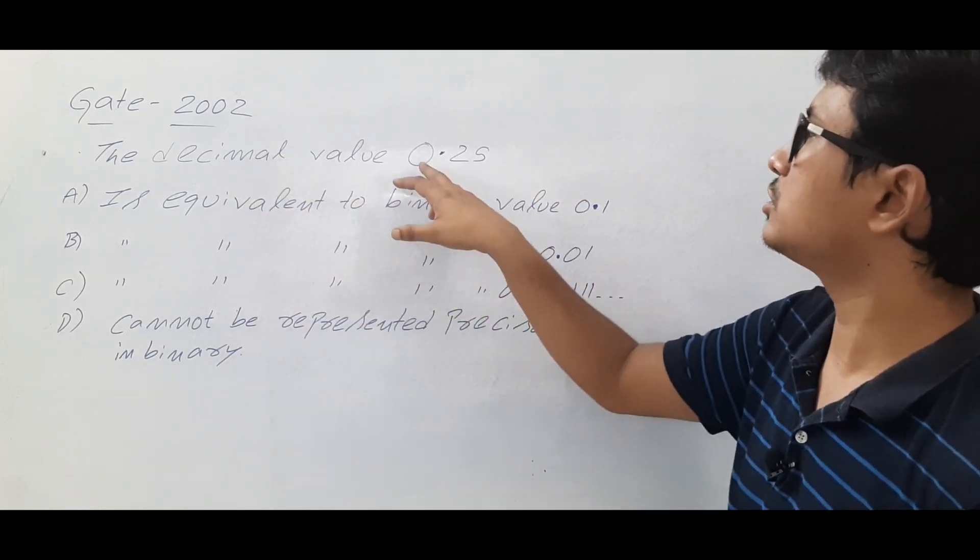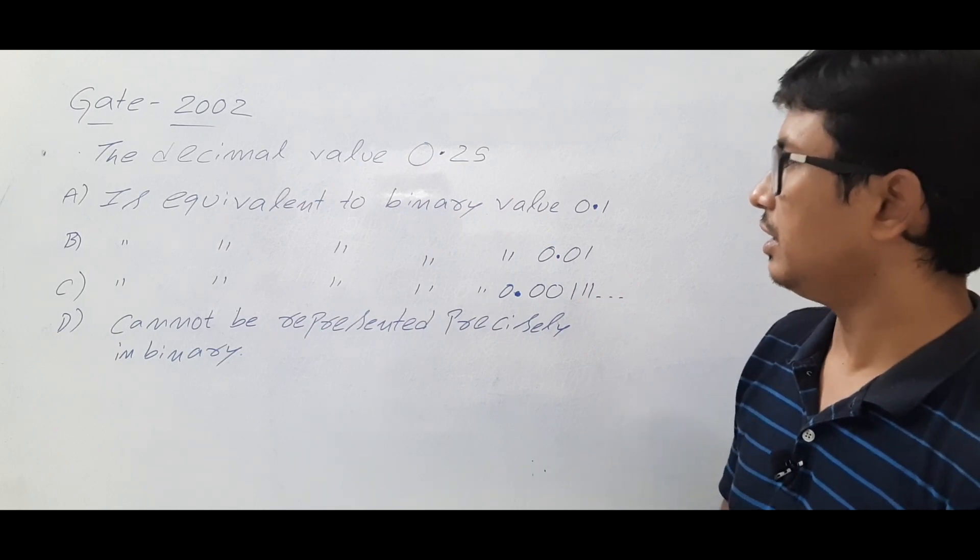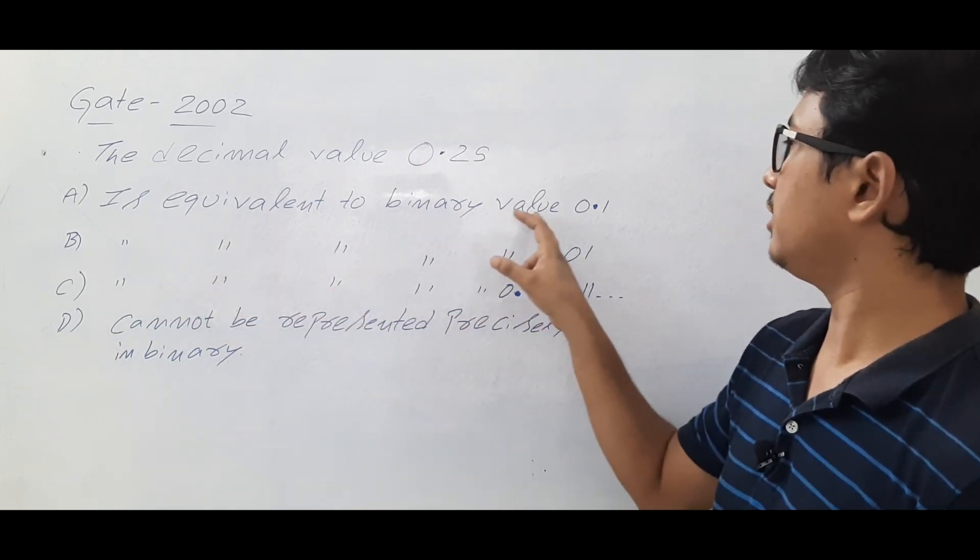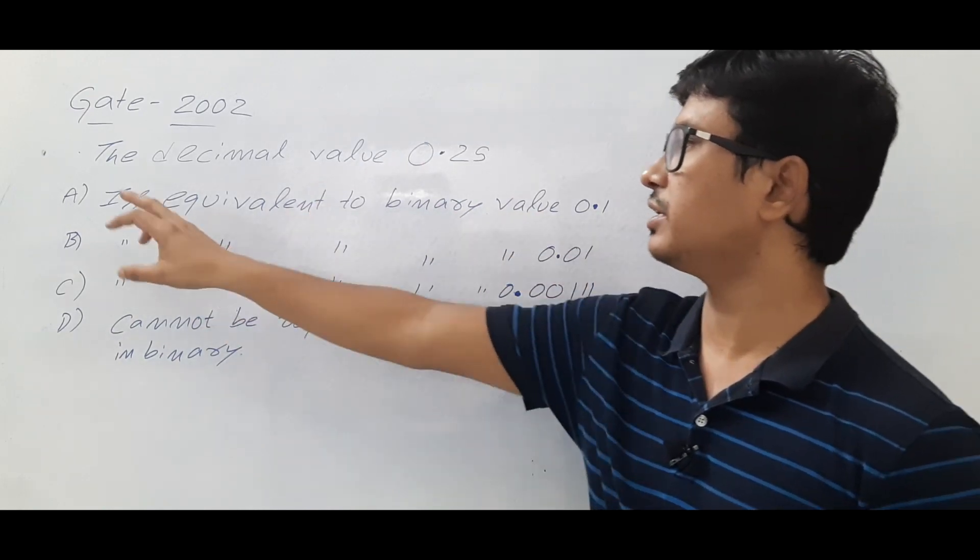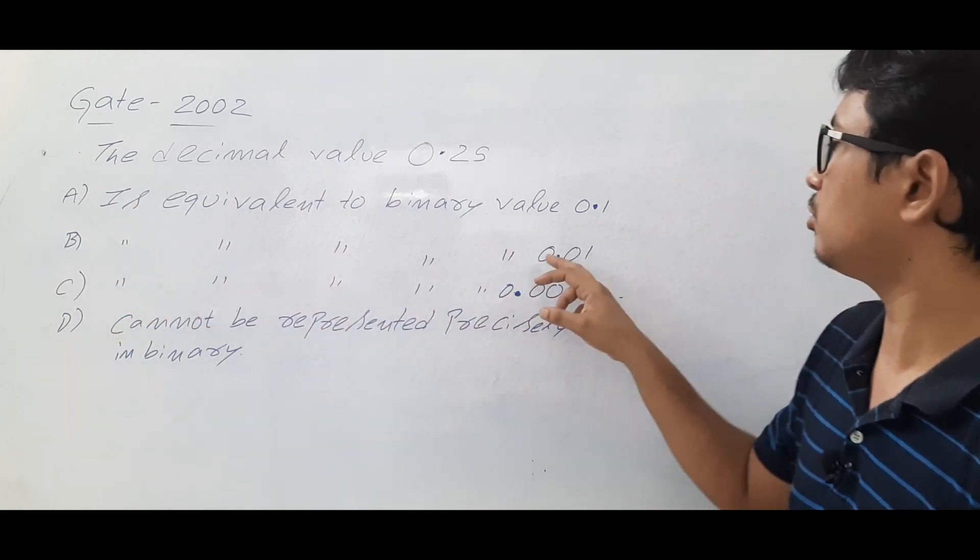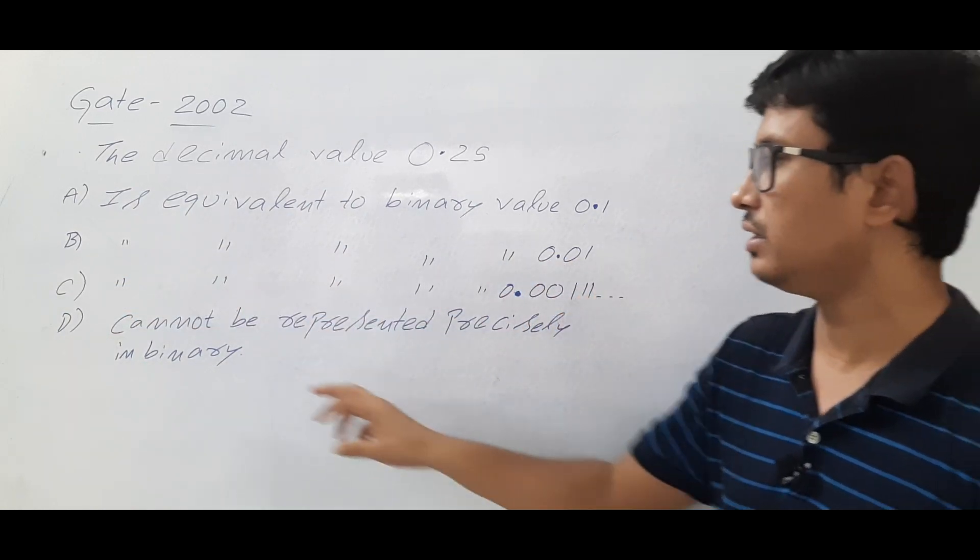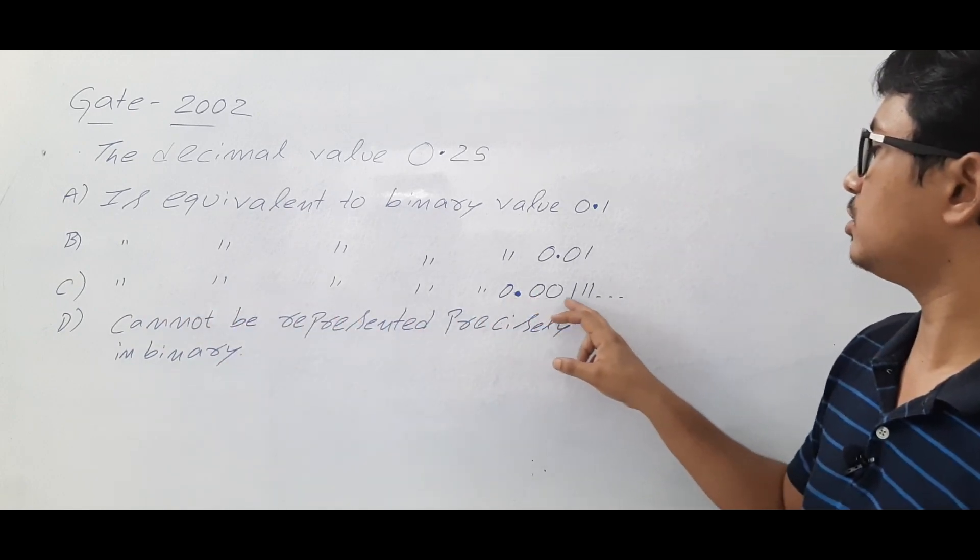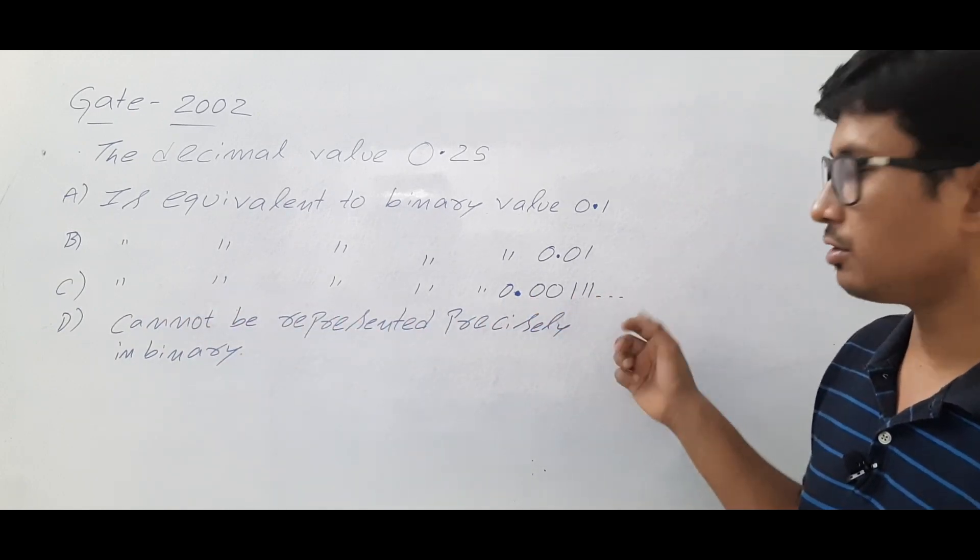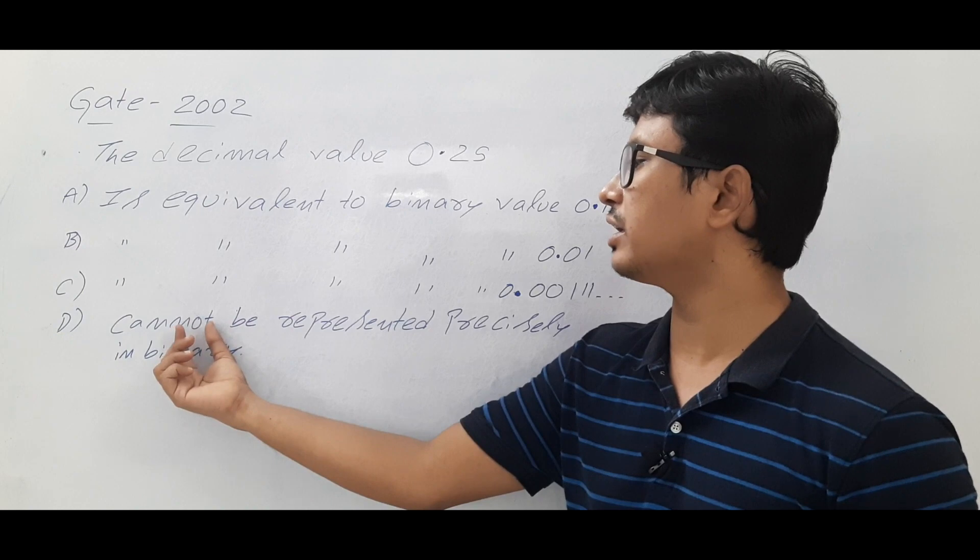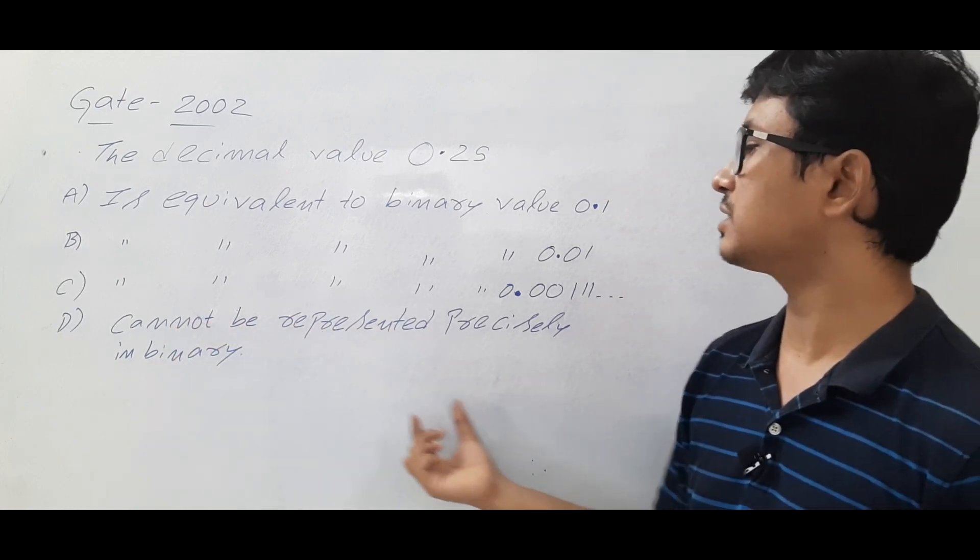The decimal value 0.25 is equivalent to binary value 0.1. They have given option A and option B, that is equal to binary value 0.01, is equivalent to 0.001111, and the fourth option they have given cannot be represented precisely in binary.